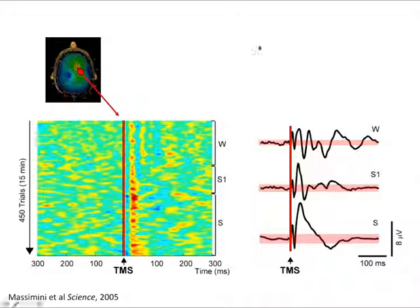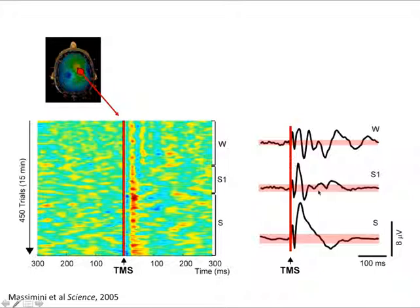This is what happens from the point of view of a single channel under the stimulator during falling asleep. Single trials are shown with voltage color-coded — red is positive, blue is negative. The corresponding averages are shown during wakefulness, stage 1, and non-REM sleep stage 3-4. During wakefulness, TMS triggers a pattern of recurrent waves of activity lasting about 300 milliseconds. During stage 1, the response is a bit larger but high frequencies are dampened and the response is short-lasting. Then you have a big positive-negative wave in non-REM sleep stage 4.